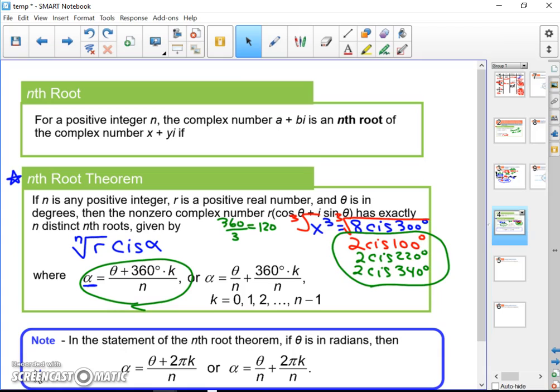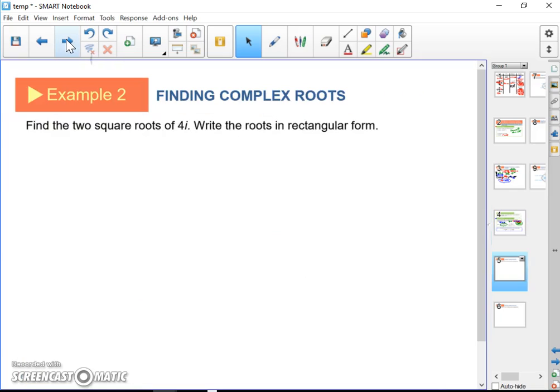That's what the nth root theorem says. So all that complicated stuff in those boxes, you can boil it down to this one example. Obviously, the values are going to change depending on what degree the equation is, but that's what it's going to look like. So let's look at an example. Example 2. Find the two square roots of 4i, write roots in rectangular form.